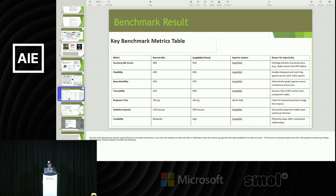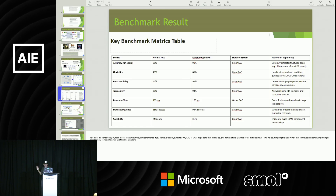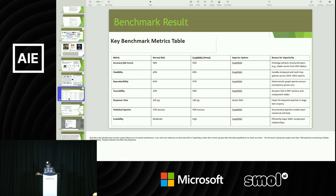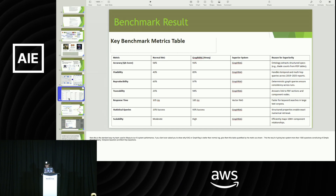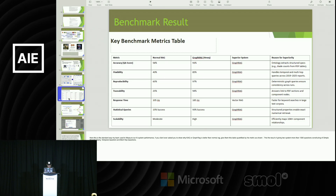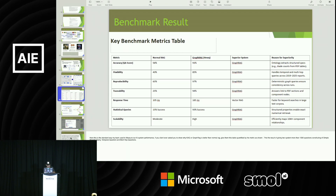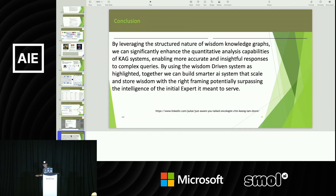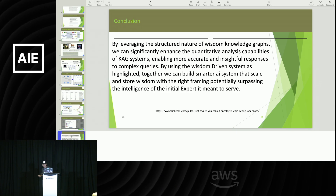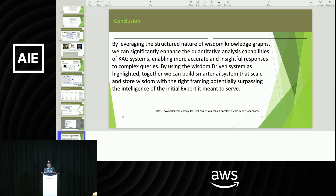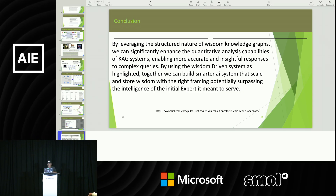Here are the benchmark results we did. If anyone asks why you want to use graph or KAG: first, accuracy — I achieved 91% because it's really good at extracting structure. Second, flexibility at 85%. Third, reproducibility and determinism. Fourth, traceability. And finally, scalability. In conclusion: by leveraging the structural nature of wisdom knowledge, we can significantly enhance the quantitative capability of KAG systems, enabling more accurate and insightful responses to complex queries, and build smarter AI systems that can scale and store wisdom to potentially support the intelligence of the domain experts we serve.